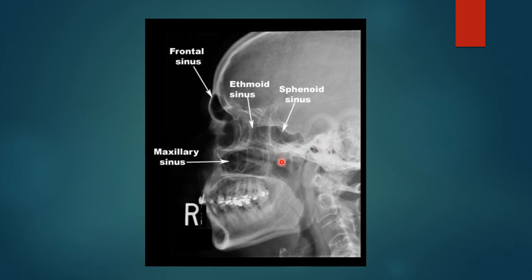Here is an example of lateral view showing the sphenoid sinus, ethmoid sinuses, frontal sinus with its anterior and posterior walls, and the maxillary sinus is also visible. The anterior and posterior extent of the sinus is visible in this lateral view.